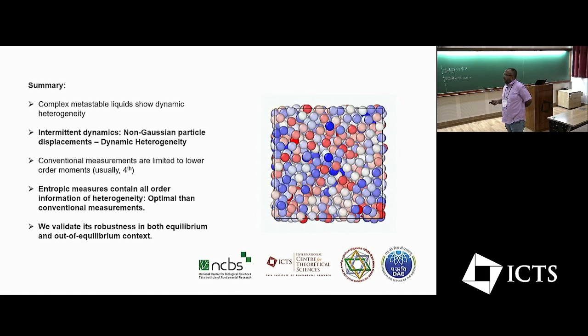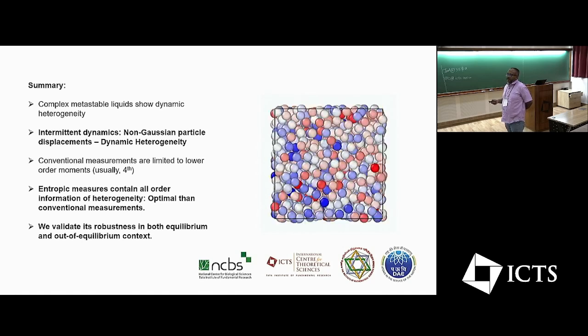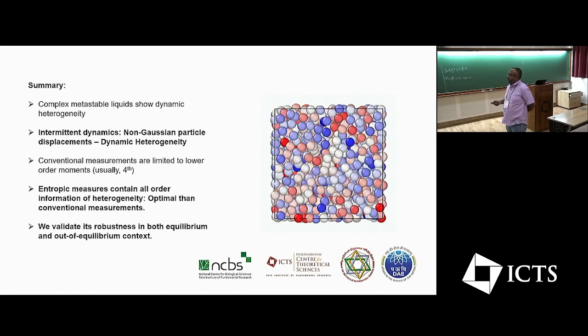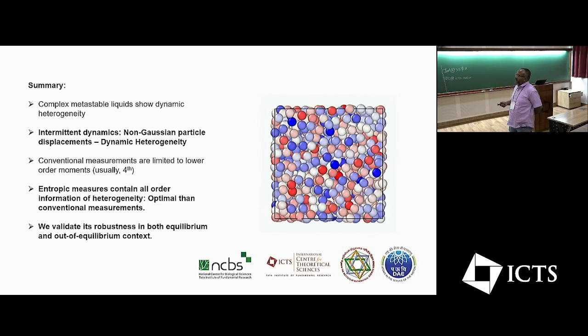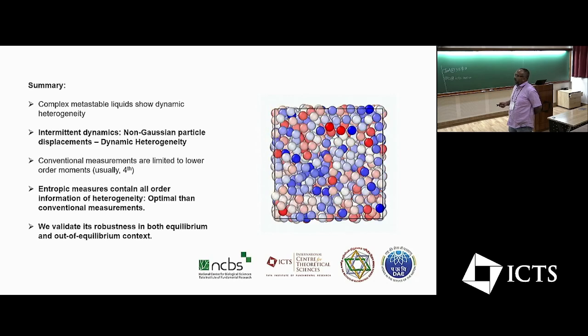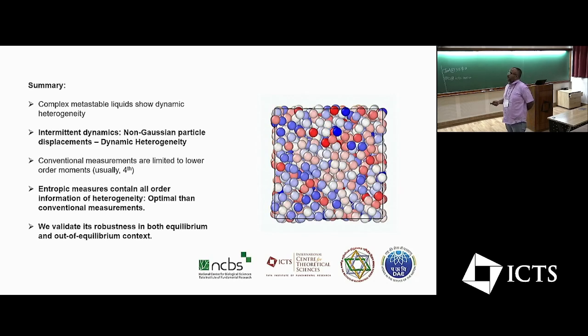Conventional measurements are limited to lower-order moments, which are usually limited to fourth or sixth order moments. On the contrary, when we deal with the entropic measures that contain all-order information and they are much more optimal than the conventional measurements.